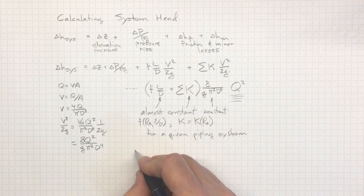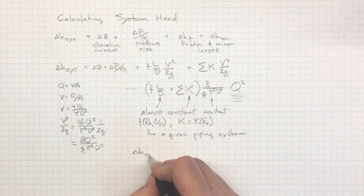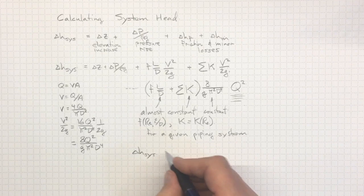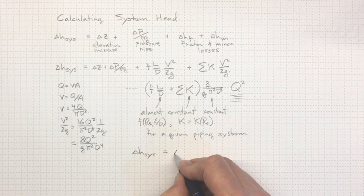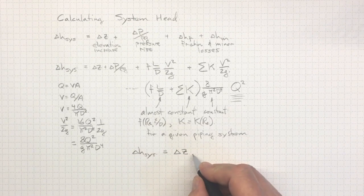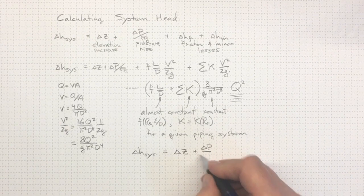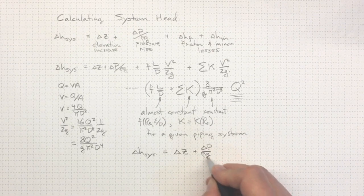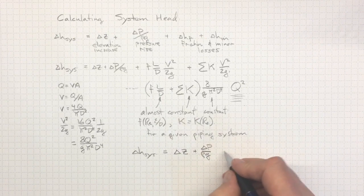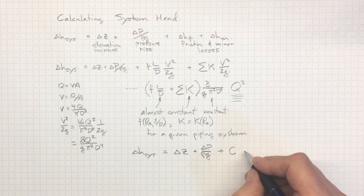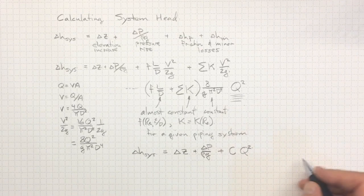So we'll wind up with our system head difference, what we need the pump to deliver in order to supply the system, dependent on the change in elevation, how much we're going up the hill, plus the change in pressure divided by rho g, how much head we need to overcome the pressure difference, plus something that we can treat as just about a constant times q squared.